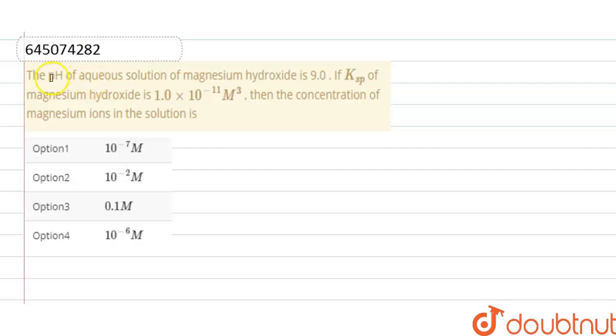Hello everyone, here the question is pH of aqueous solution of magnesium hydroxide is 9. If Ksp of magnesium hydroxide is 1 into 10 raised to the power minus 11, then the concentration of magnesium ions in the solution is. So here we have to find out concentration of magnesium ions.